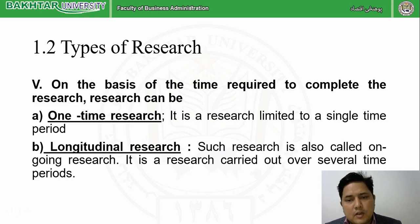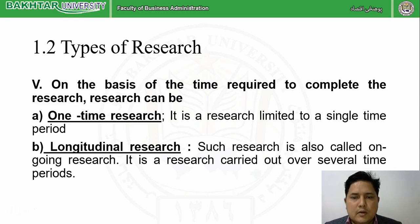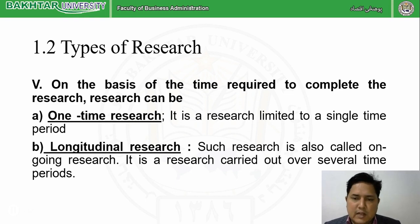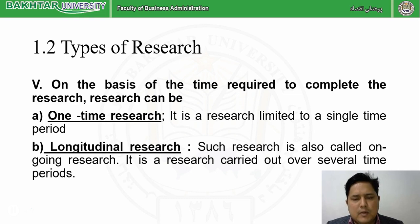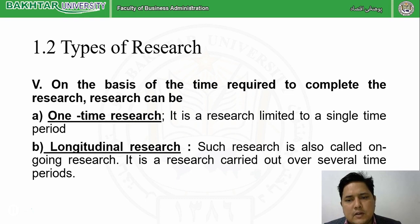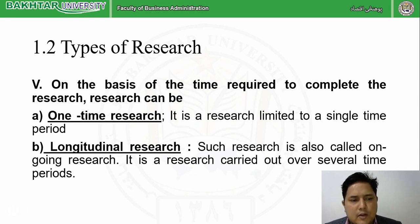Longitudinal research — also called ongoing research — means for a certain period of time you do the research, then stop, find some results, wait for some time, and then again start your research from where you stopped. For example, I conducted research in the winter season — three months of research this year — then I wait nine months, and again start my research from where I stopped. This is called longitudinal research.